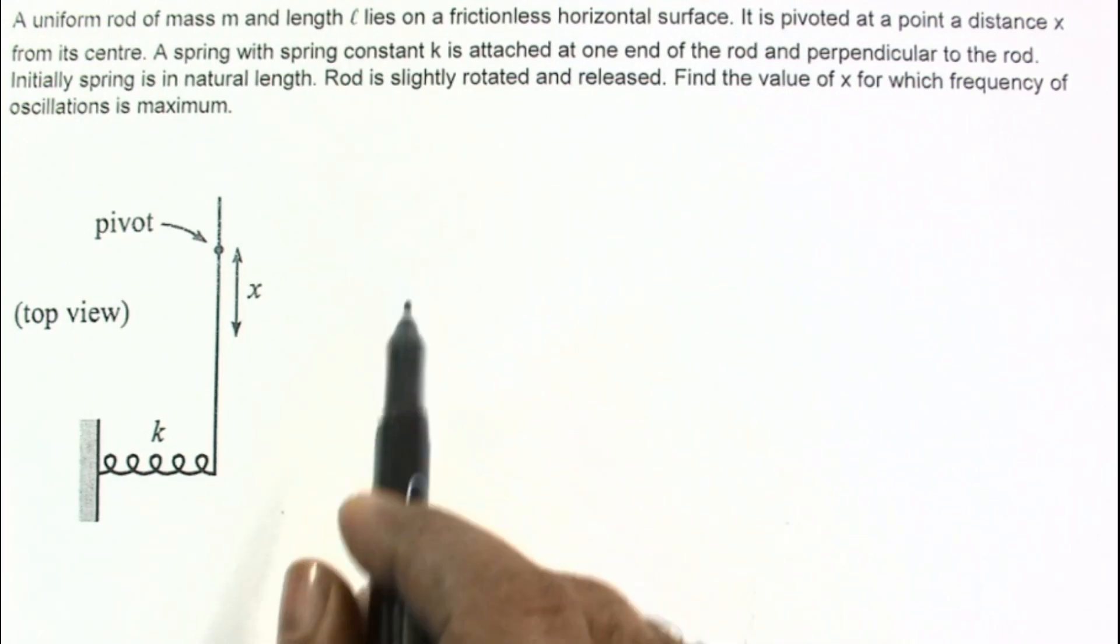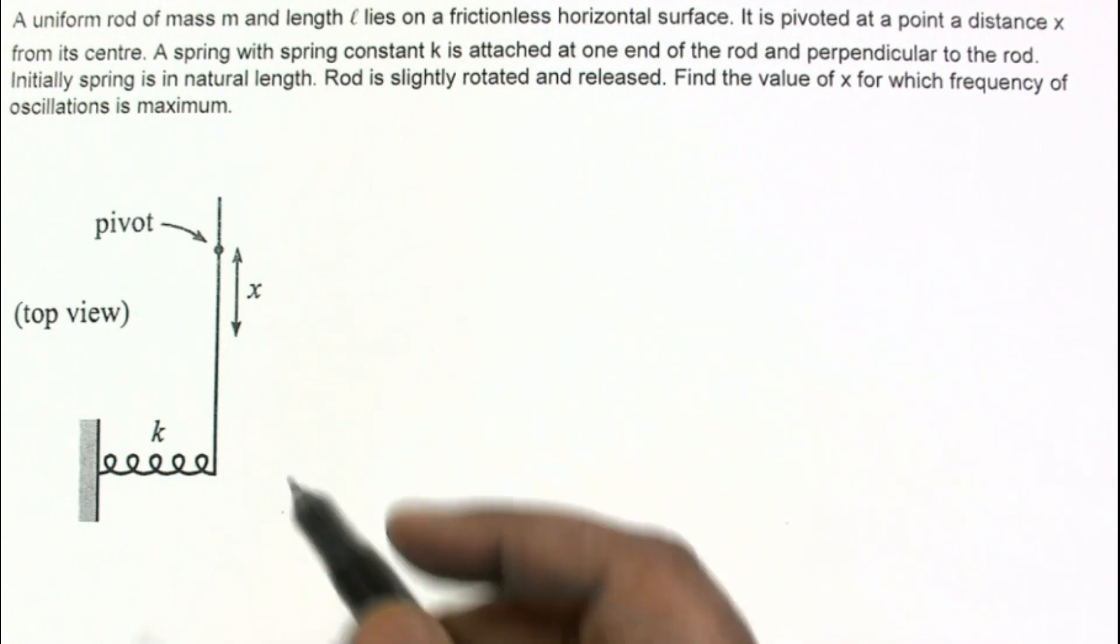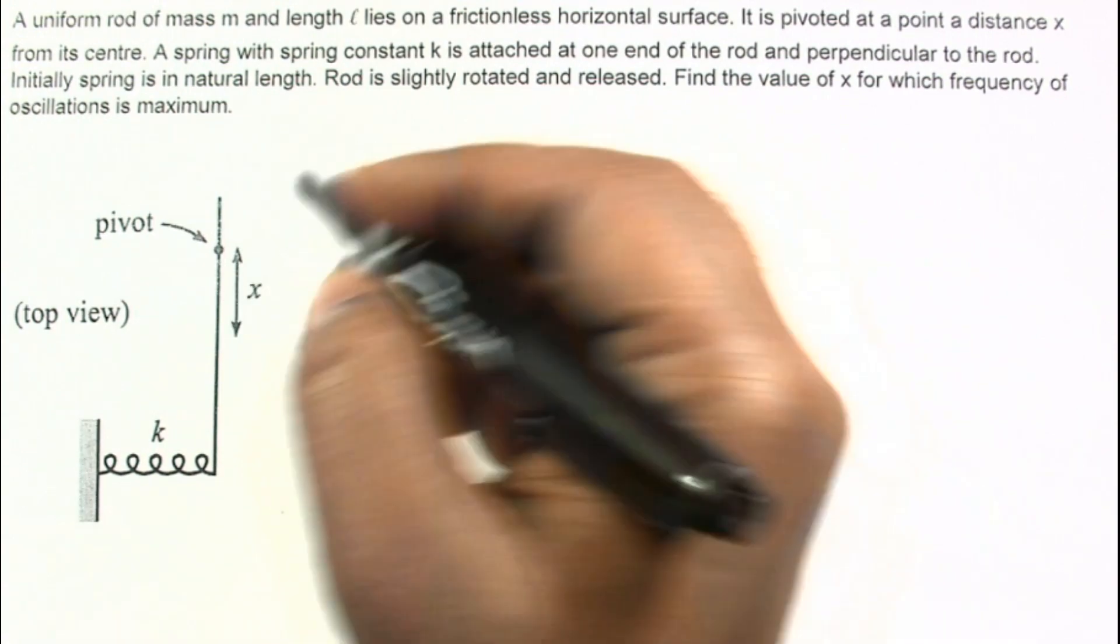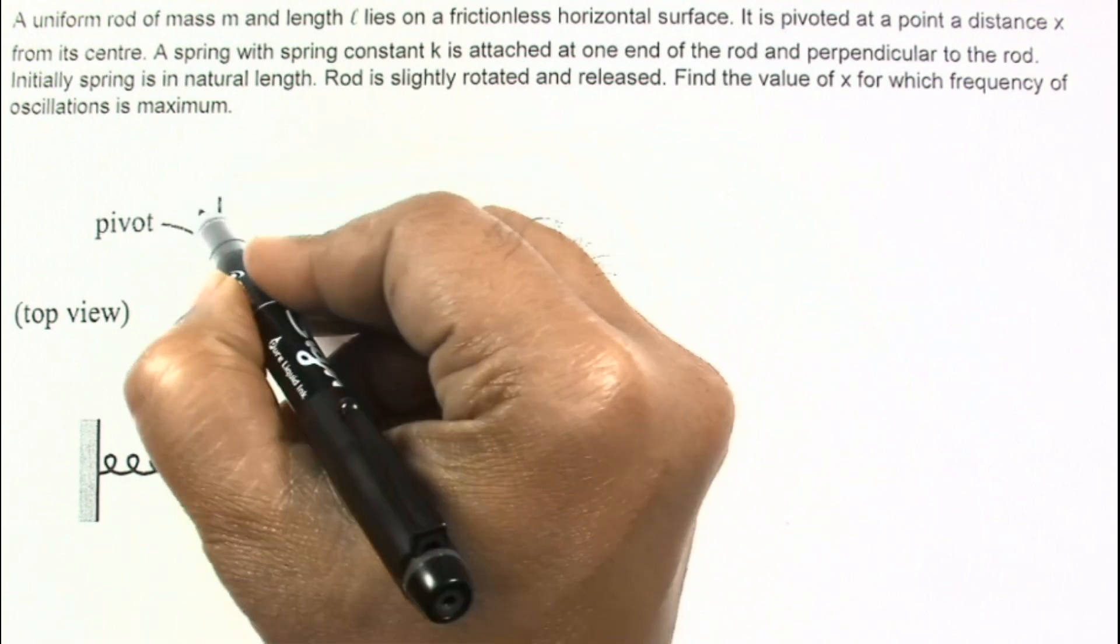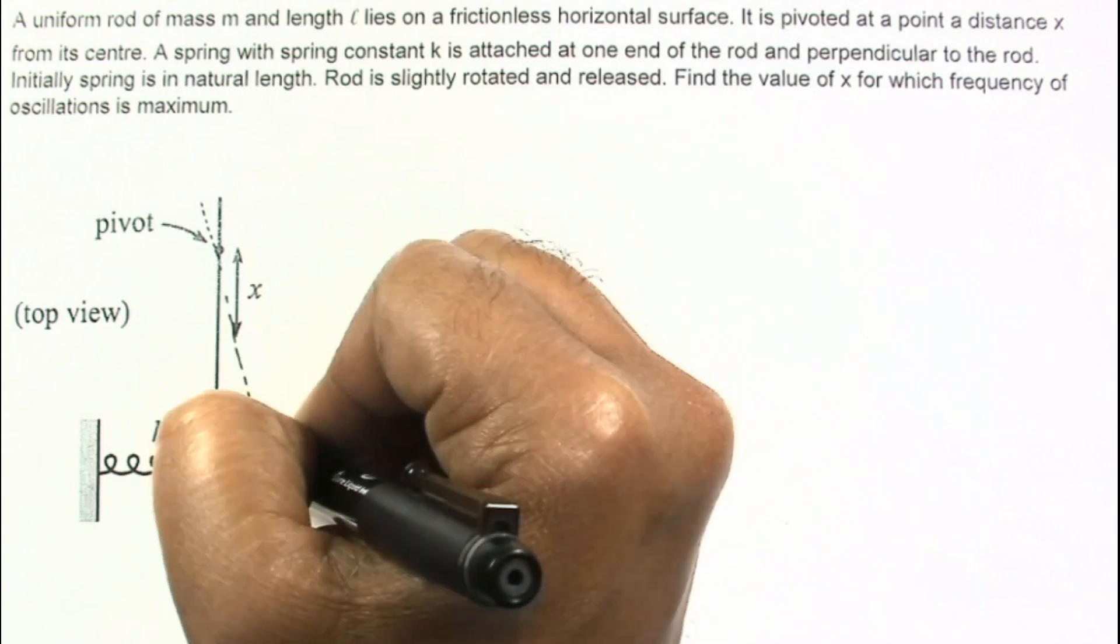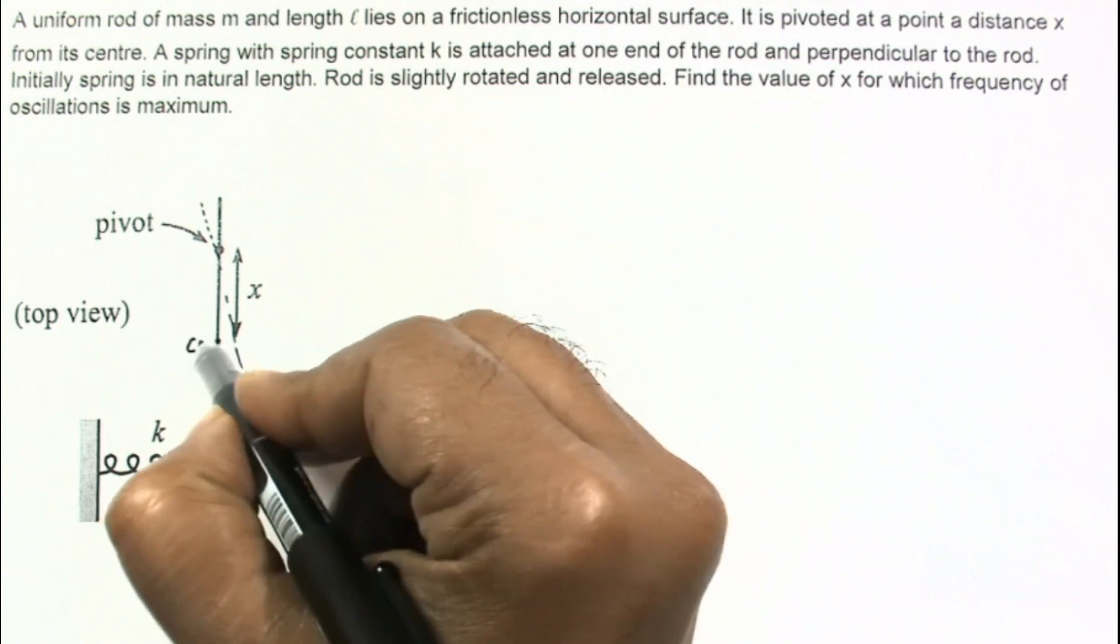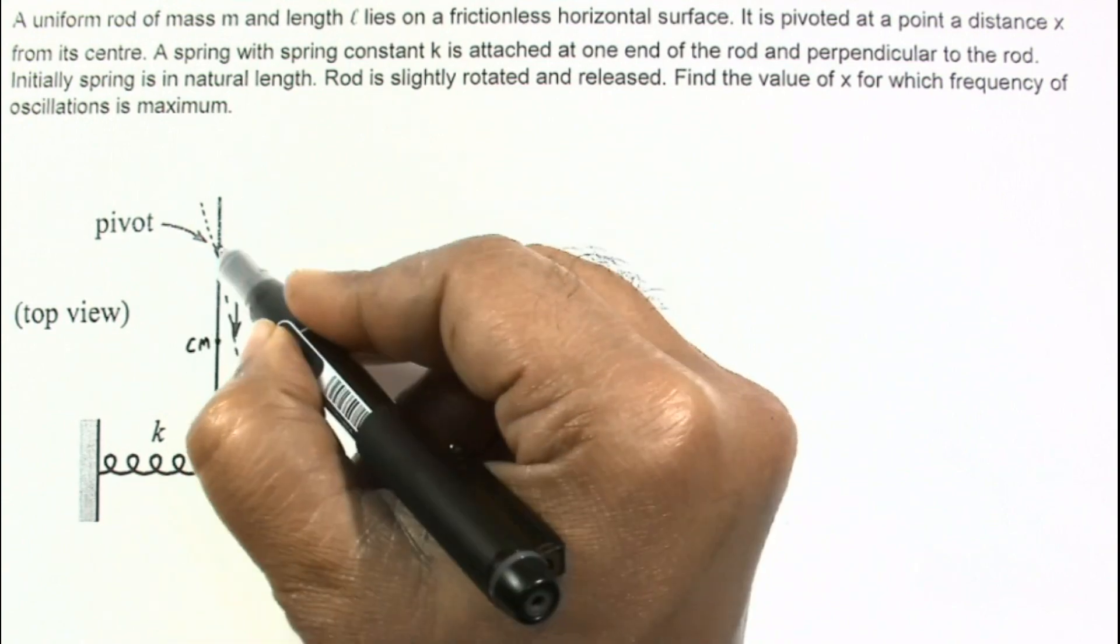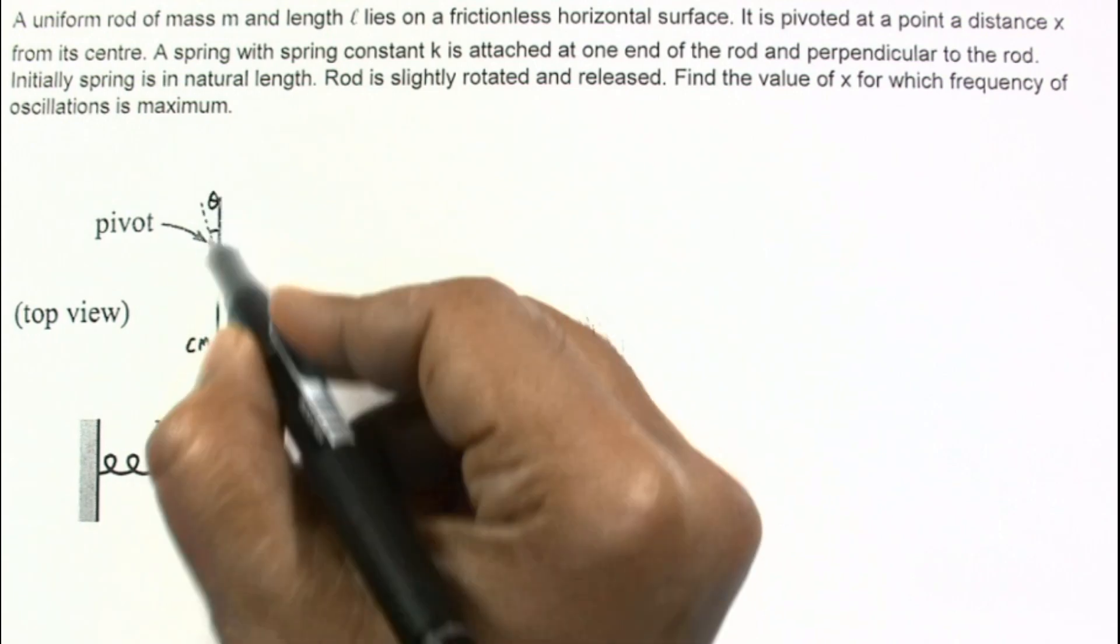So we have to find the maximum possible frequency for this system. Let us rotate this rod slightly by a very small angle. This is the center of mass and from center of mass the hinge is at a distance x. So let us rotate this rod by a very small angle theta.